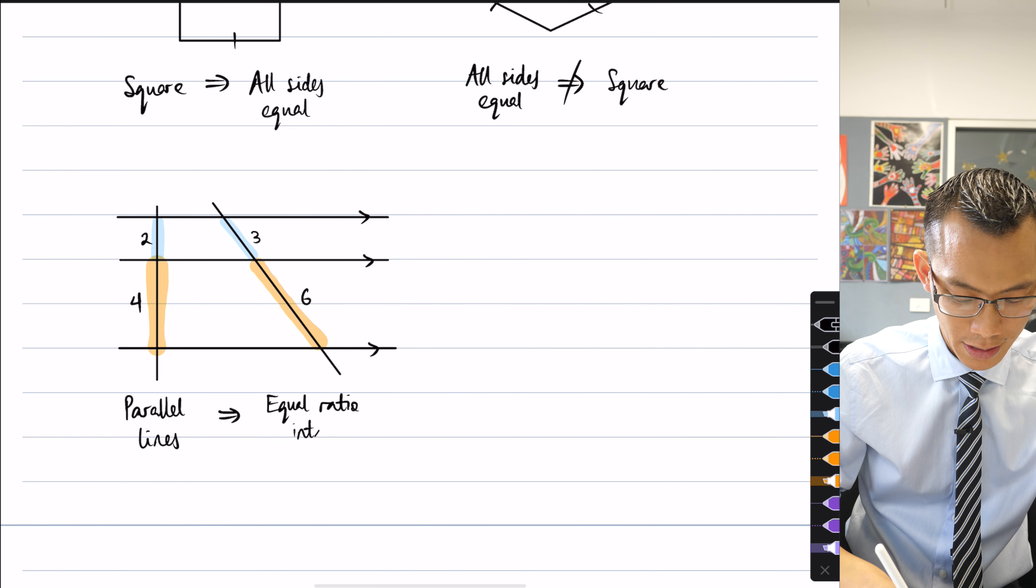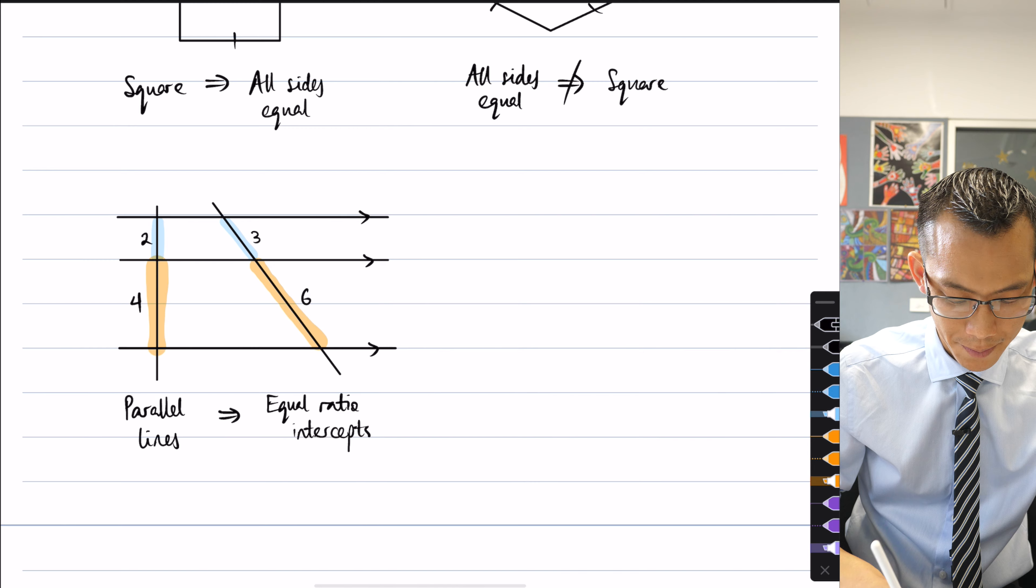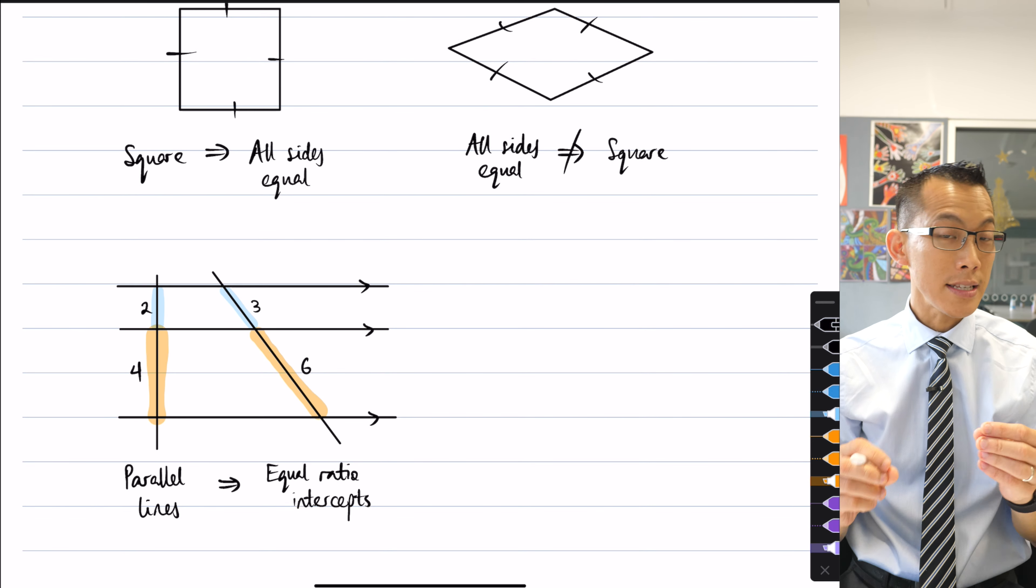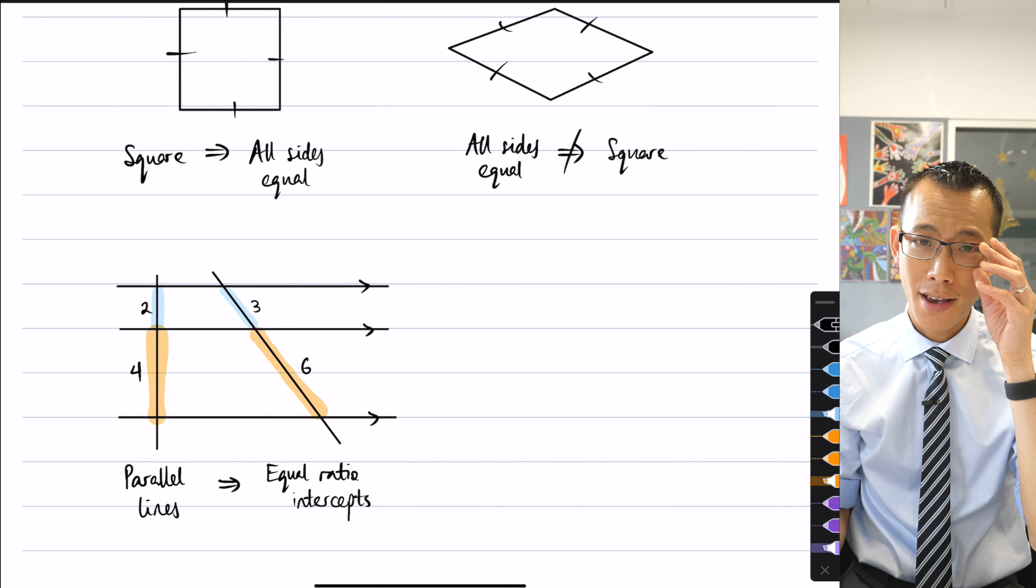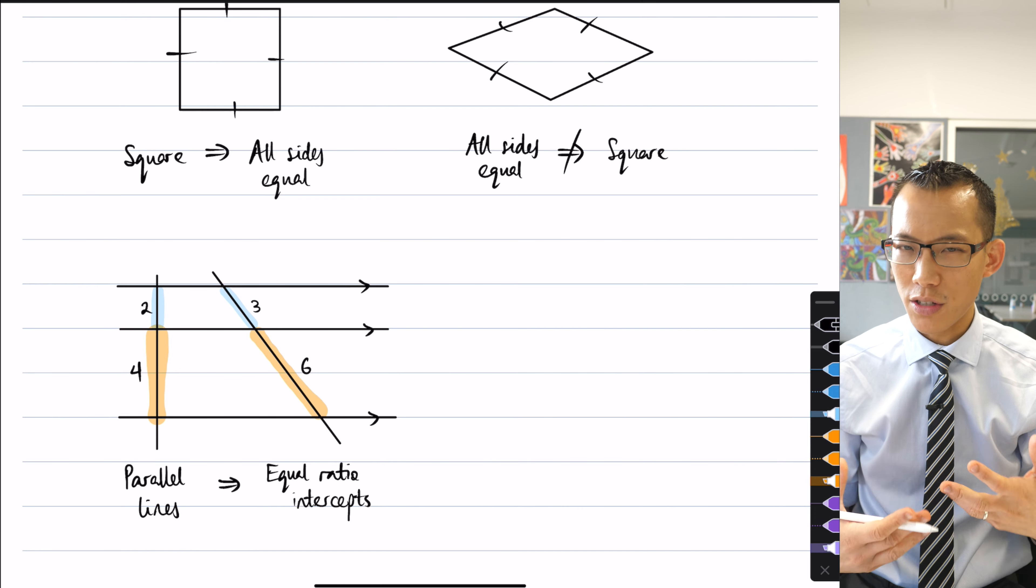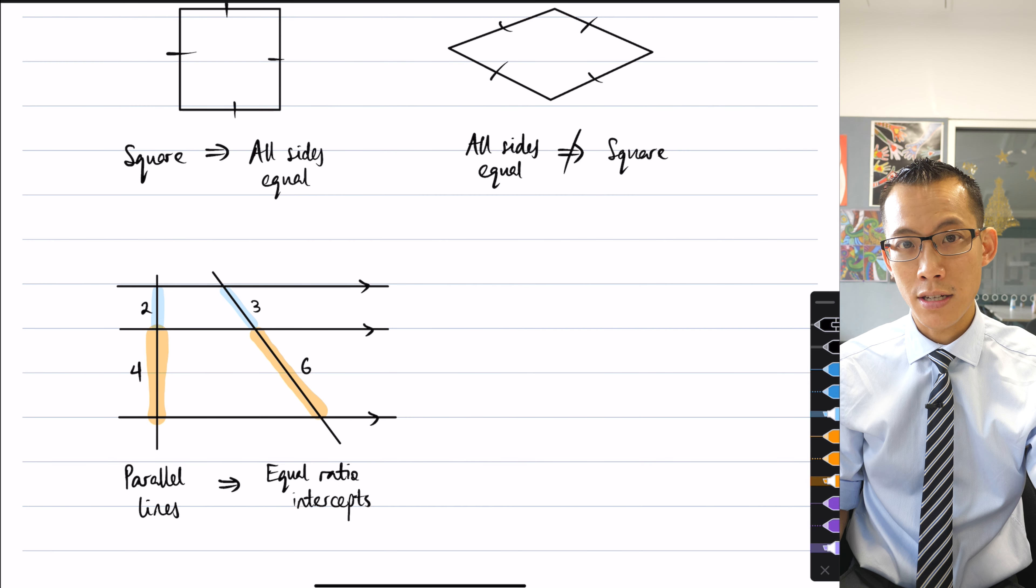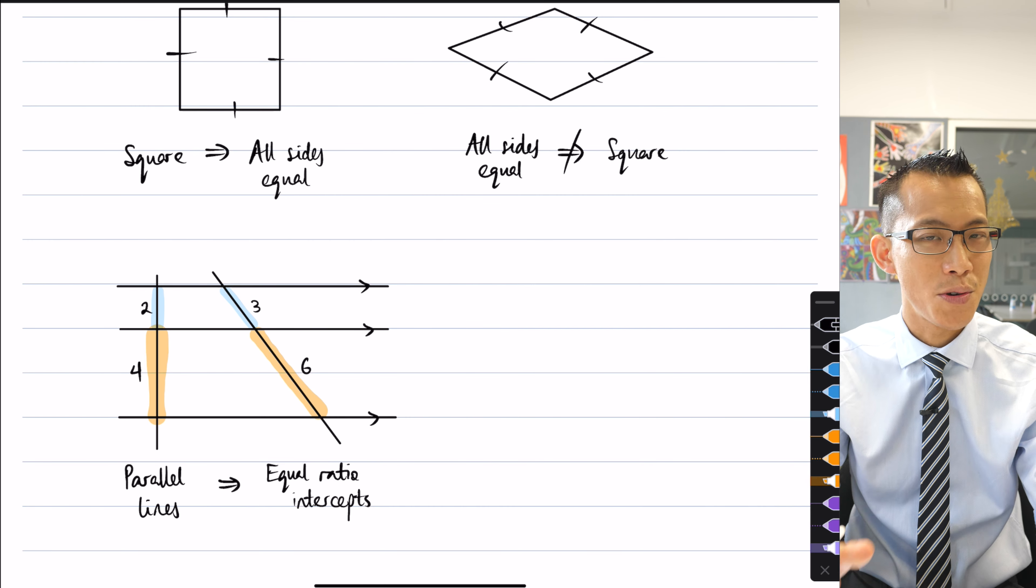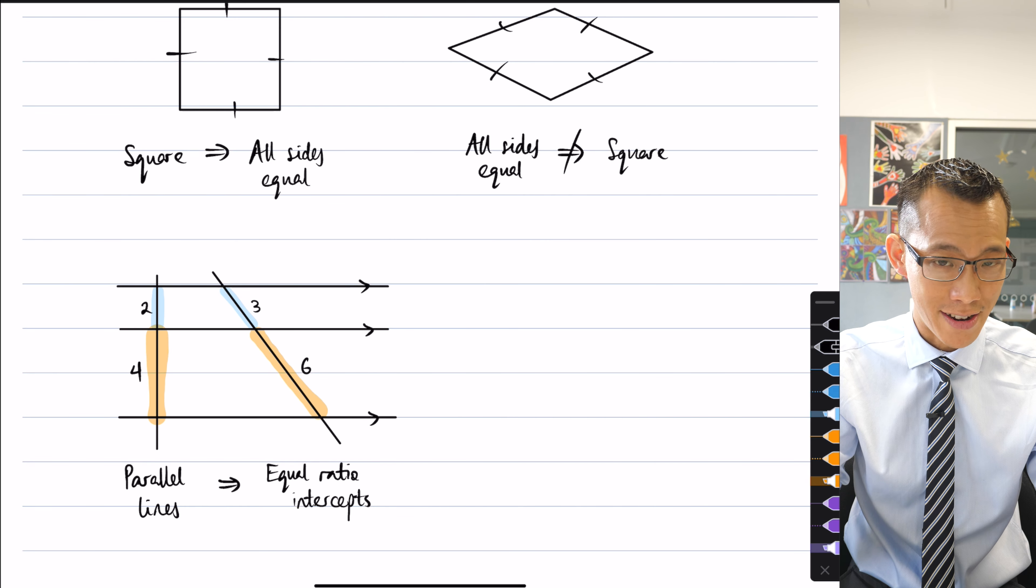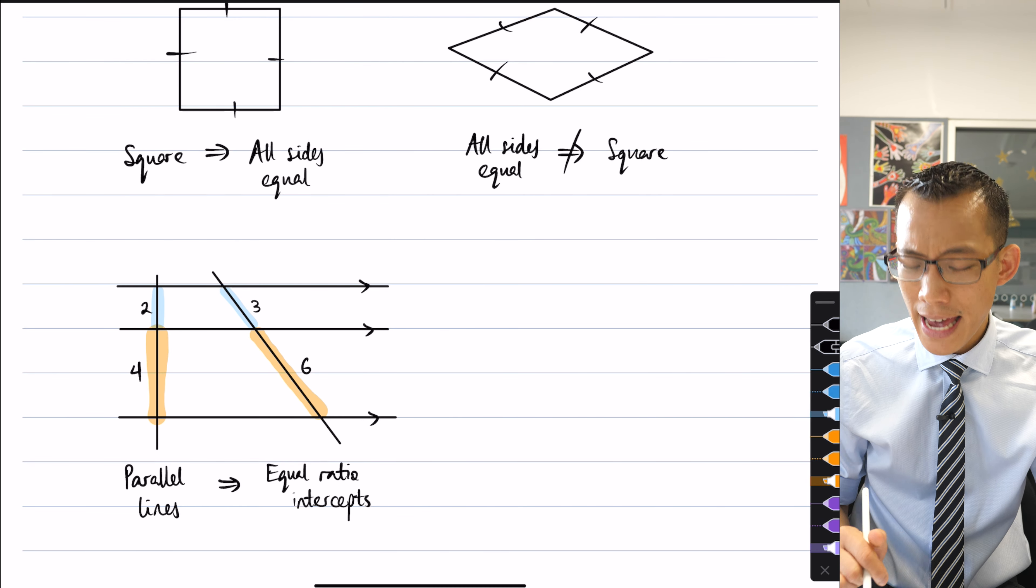So in here, the logic runs like so, parallel lines gives you equal ratio intercepts. Now again, in this case, this is another important instance of where the converse is not true. It feels like it ought to be, it feels intuitive that if you've got equal ratio intercepts, then maybe that also means that you will have that same set of parallel lines. But it's not true, and I can really easily show you that with a counter example.